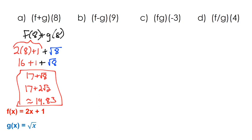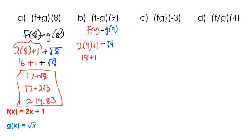For subtraction, we do f of 9 minus g of 9. Substituting 9 into f of x gives 2 times 9 plus 1, and we subtract the square root of 9. This becomes 18 plus 1 minus the square root of 9, which is 19 minus 3, giving us 16.